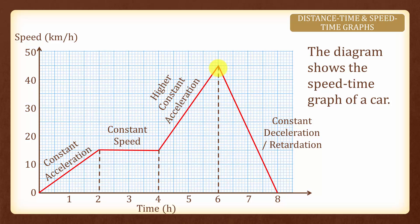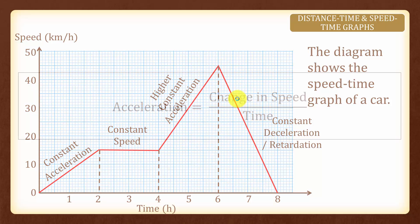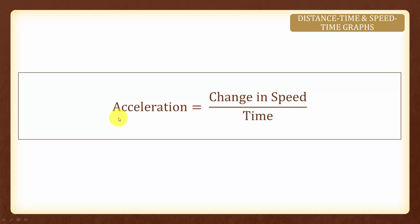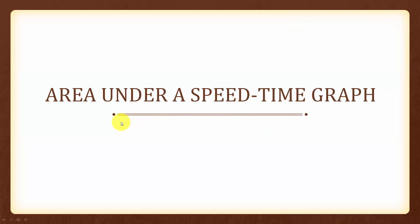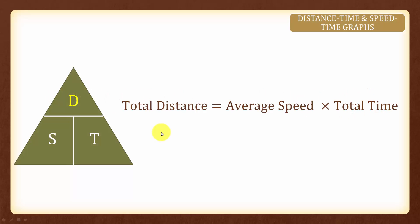And we can find the retardation by finding the gradient of this line here. Once again, do take note that acceleration is equal to the change in speed over time. Now let us look at what the area under a speed time graph means. The total distance formula is given by the average speed times the total time.